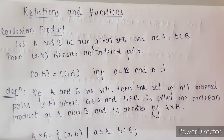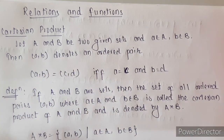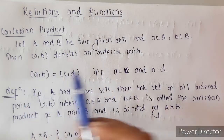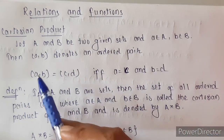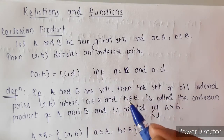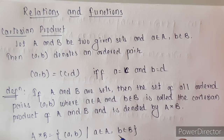Let A and B be two given sets, and let a be in A and b be in B. Then this (a, b) is nothing but an ordered pair. The set of all these ordered pairs, wherein the first element belongs to set A and the second element belongs to set B, is nothing but the Cartesian product of set A and B.